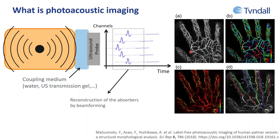For example, you can see the vascularization of a patient's hand, where color-coding represents different depths. You can also illuminate at different wavelengths and get information about chromophore concentration locally. It's especially efficient at detecting blood vessels, as you can see in those kinds of pictures.